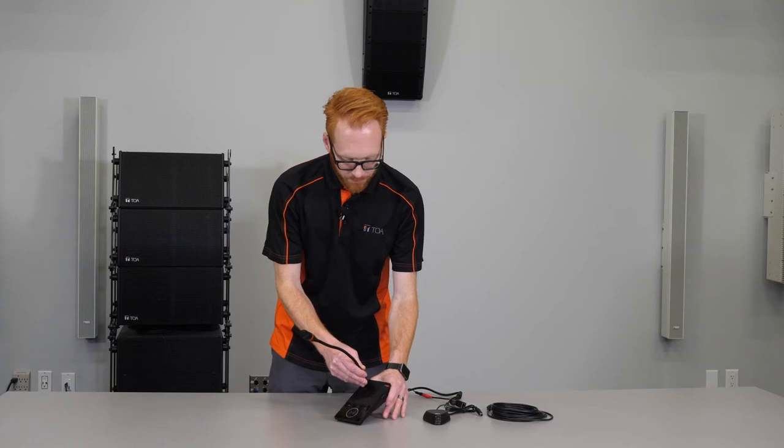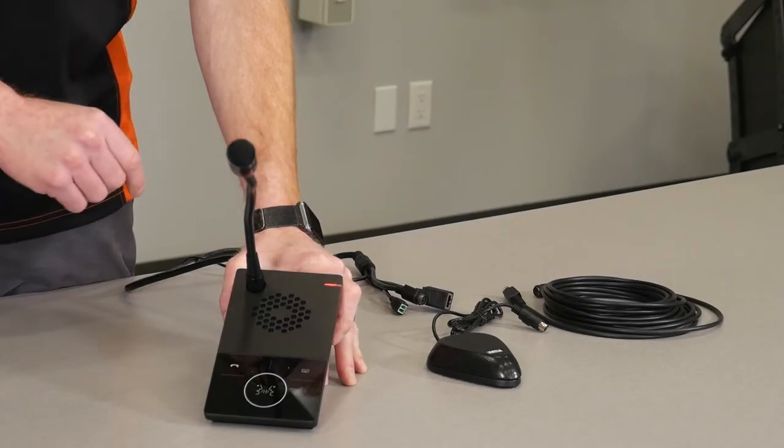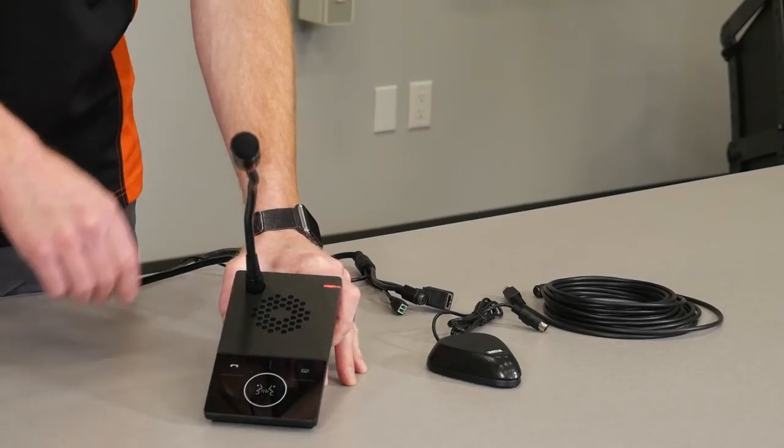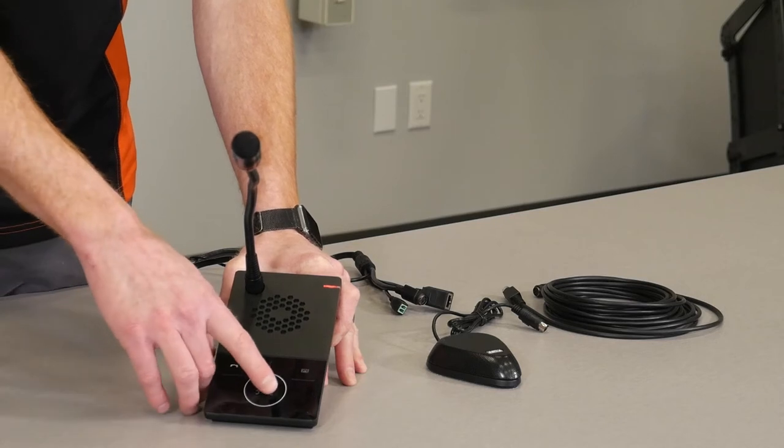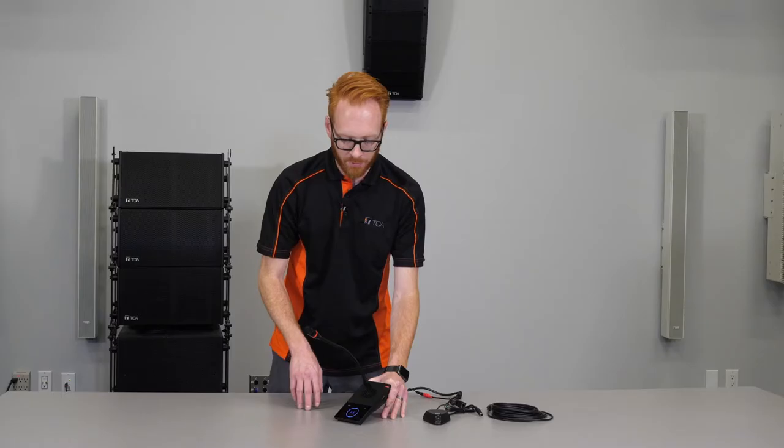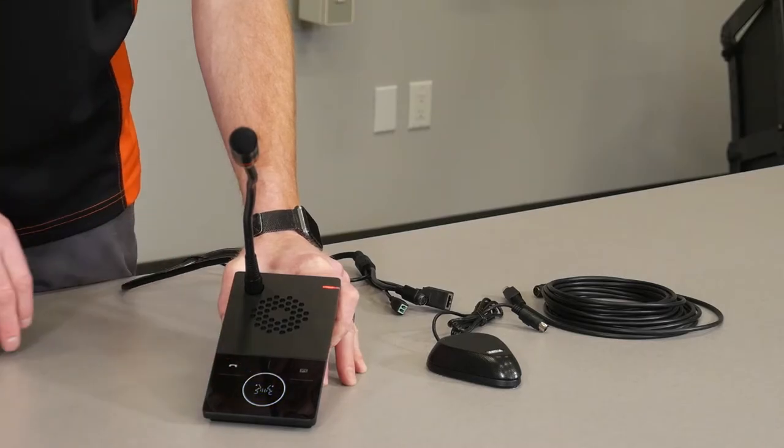Alright, let's take a look at the base unit. Here we have an indicator that shows us power and network. As well, we have a push to talk button which will illuminate blue or red on the microphone. That can be toggled.